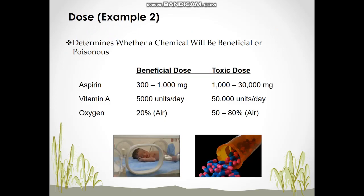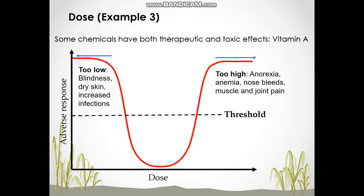This table shows that a substance can be both beneficial and poisonous to our body. For instance, lower doses of aspirin — 300 to 1000 mg — can be beneficial, but higher doses between 1000 and 30,000 mg are toxic. Oxygen at a normal level of about 20% in air is necessary, but 50 to 80% oxygen can be toxic. For vitamin A, deficiency is associated with blindness, dry skin, and increased risk of infection, while high doses can cause anemia, nosebleeding, and muscle and joint pain.